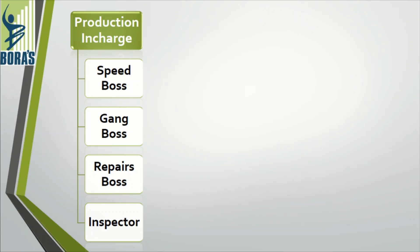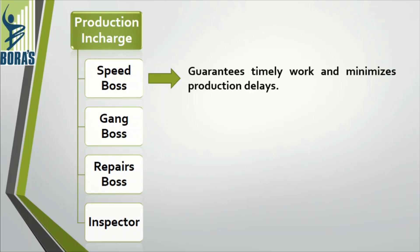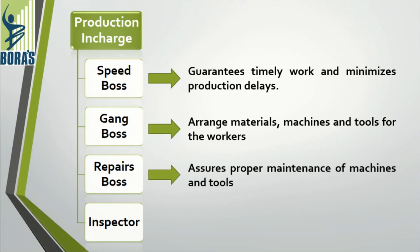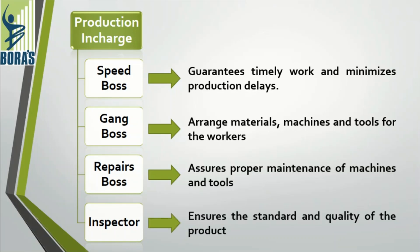Taylor divided production and execution activities among four specialists. These are: speed boss, gang boss, repair boss, and inspector. The speed boss ensures that work is completed on time with minimum delay. The gang boss ensures that material, machines, and tools are available to workers at the right place, at the right time, and in the right quantity. The repair boss ensures that machines and tools are functioning properly. The inspector ensures that standards and quality are being maintained.